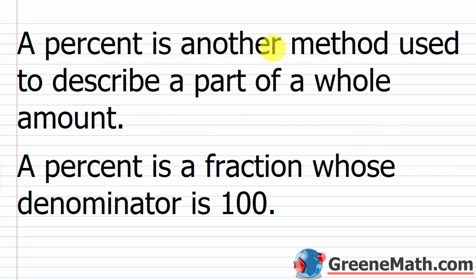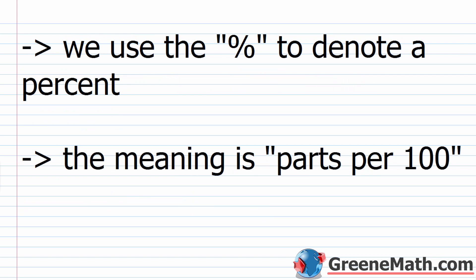A percent is just another method used to describe a part of a whole amount. Basically it's just another fraction. A percent is a fraction whose denominator is 100. So if you see a fraction and the denominator is 100, you're dealing with a percent. As a more convenient way to write a fraction with a denominator of 100, we can use the percentage symbol. One thing you need to understand is that the literal meaning is parts per 100.